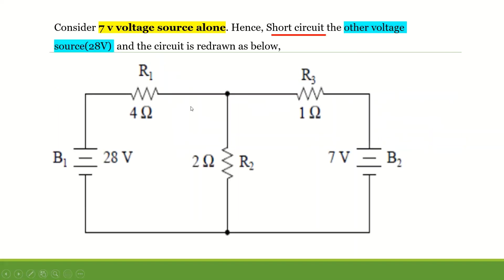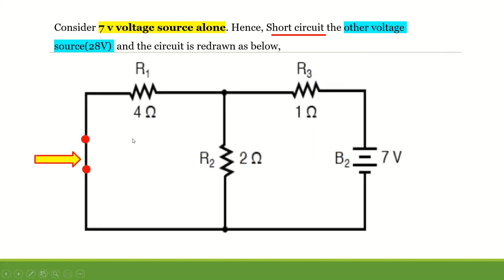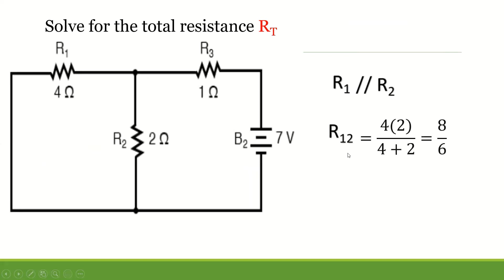Now let us consider the 7-volt voltage source alone, so we are going to short circuit the 28-volt supply. We notice that R1 and R2 are in parallel. So R12 equals the product 4 times 2 divided by 4 plus 2, equals 8 divided by 6, giving 1.33 ohms.